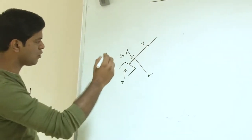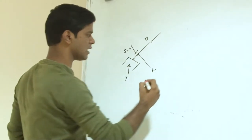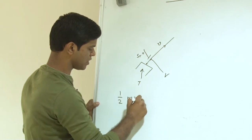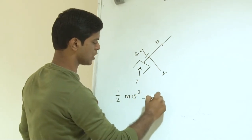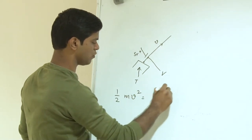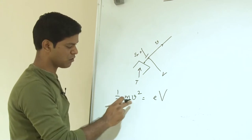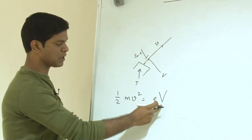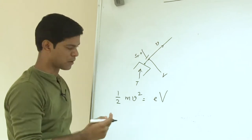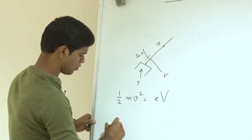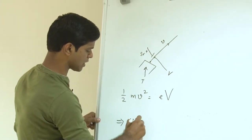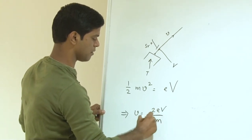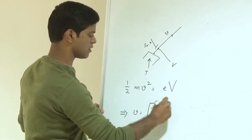If you try to write an expression for this kinetic energy, it should be ½mv² = eV, where m is the mass, v is the velocity through which the ion will be moving, and capital V is the electric potential. If you simplify this, the velocity at any point of time should be the square root of 2eV/m.